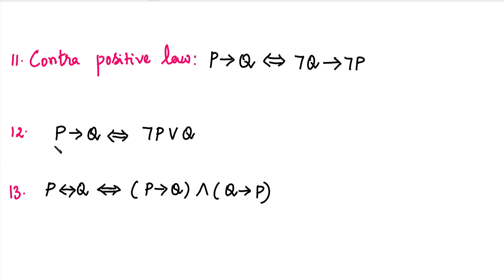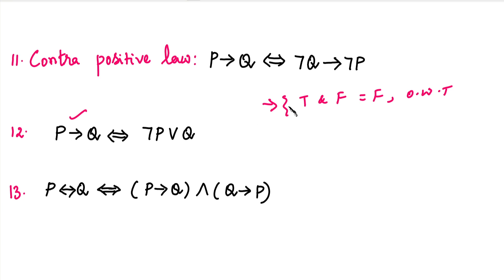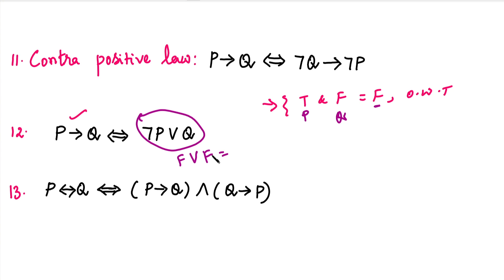The next law: if P then Q is equivalent to negation P OR Q. If P is true, then negation P is false. With the OR and Q in between, both sides of the equivalence give the same value, so this law is valid.